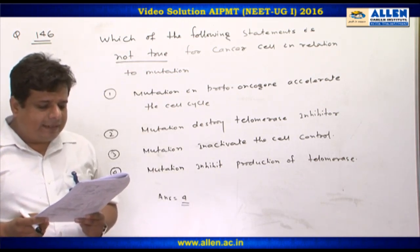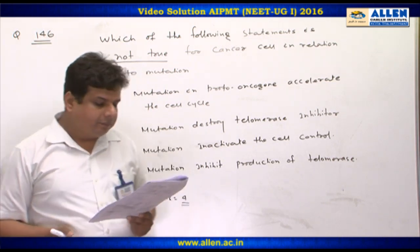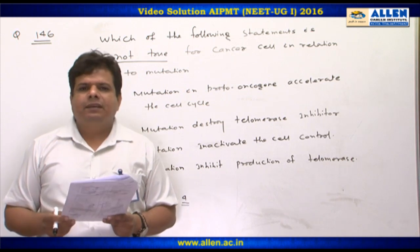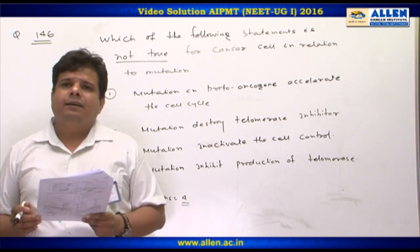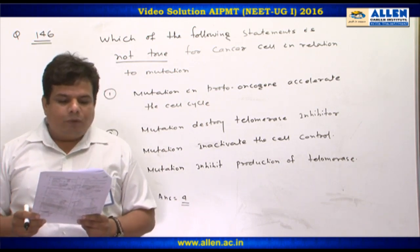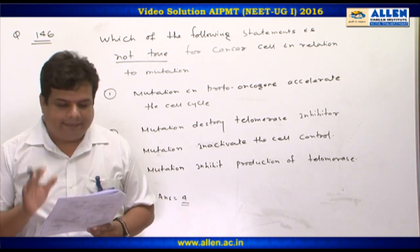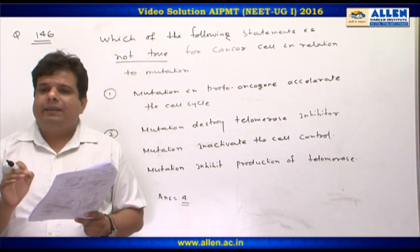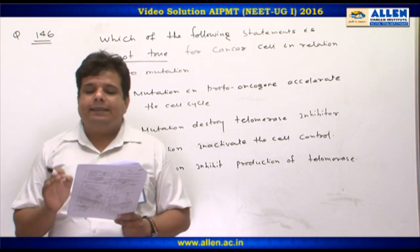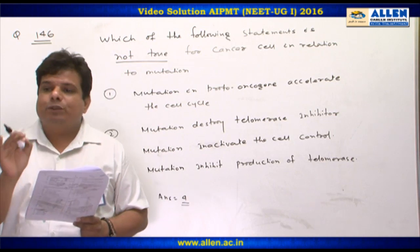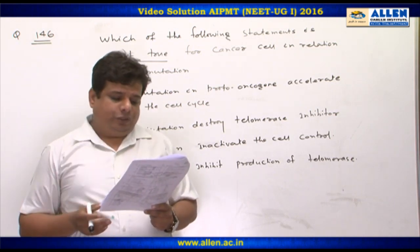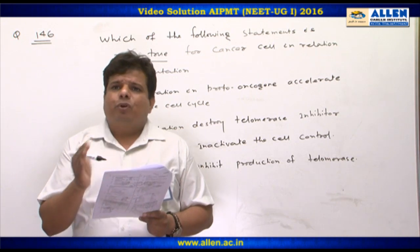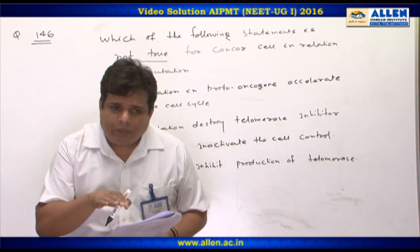Option three: mutation inactivates the cell control — absolutely correct. Option four: mutation inhibits production of telomerase. Regarding telomerase in relation to cancer: telomerase is commonly expressed in human cancer cells, and increased telomerase expression produces vulnerability to cancers. If mutation inhibits production of telomerase, it means telomerase production will stop or be retarded.